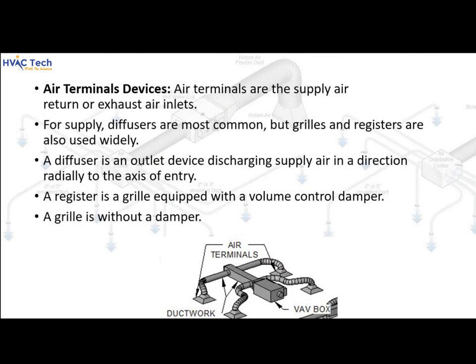Air terminal devices are the supply air outlets and return or exhaust air inlets. For supply, diffusers are most common, but grills and registers are also widely used. A diffuser is an outlet device discharging supply air in a direction radially to the axis of entry. A register is a grill equipped with a volume control damper, while a grill is without a damper.